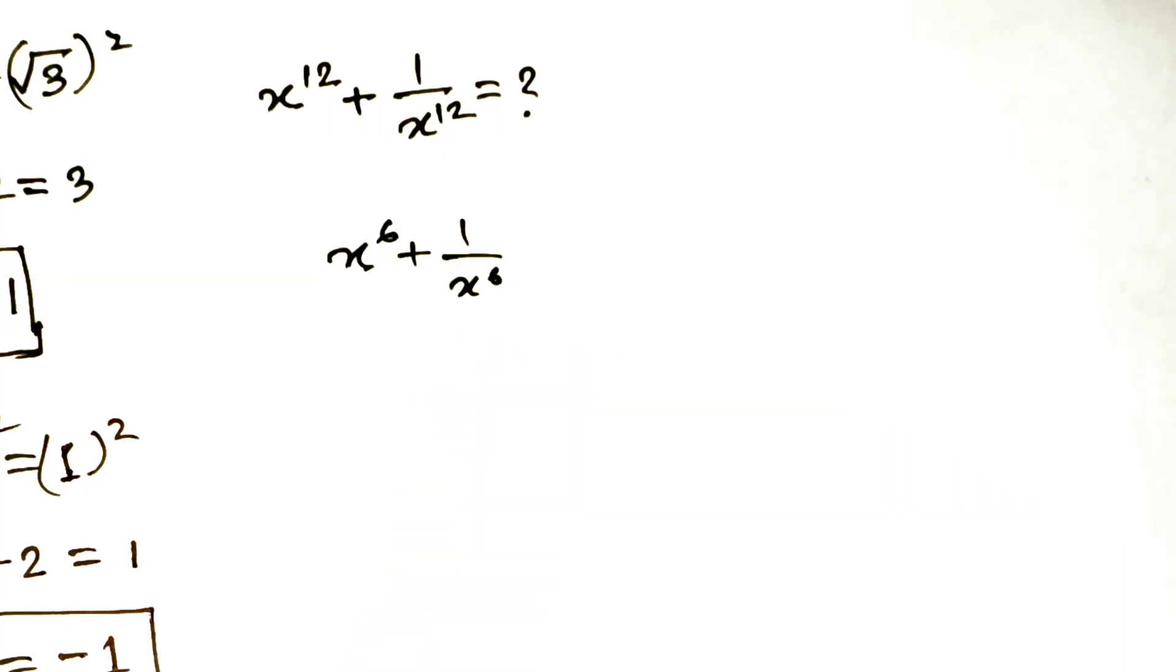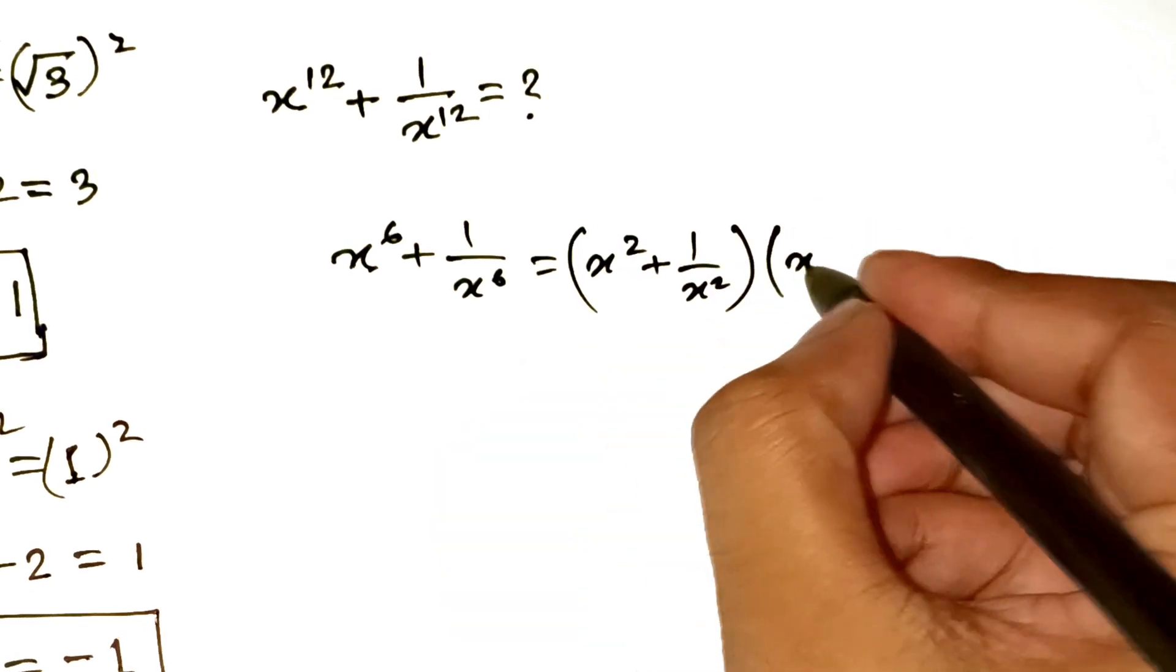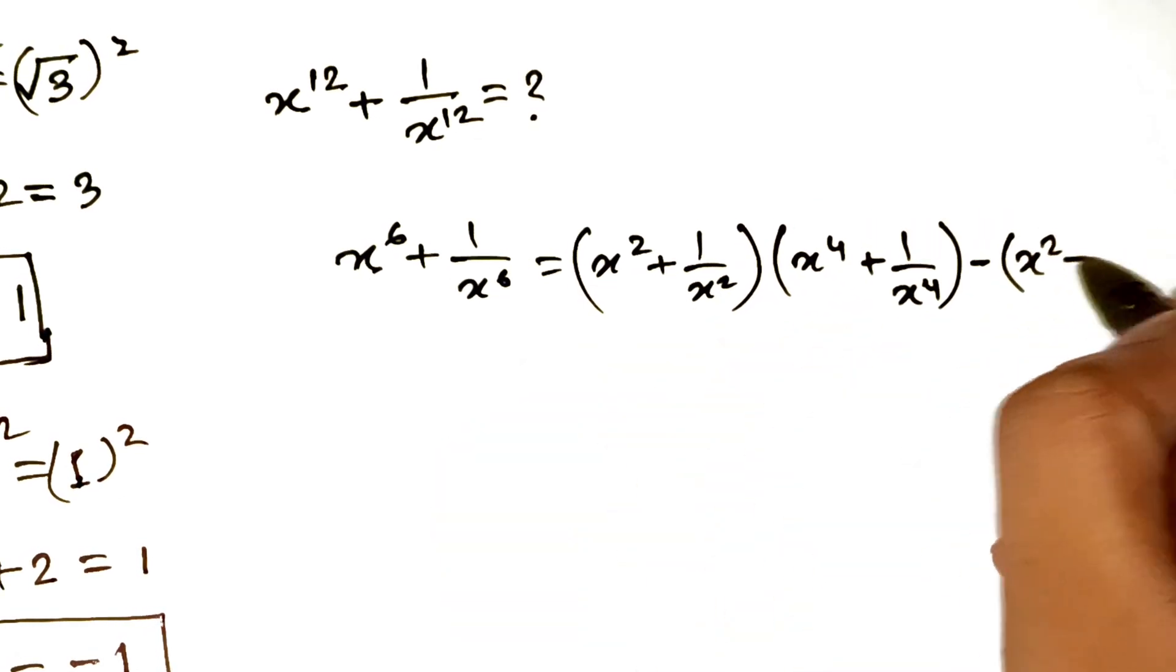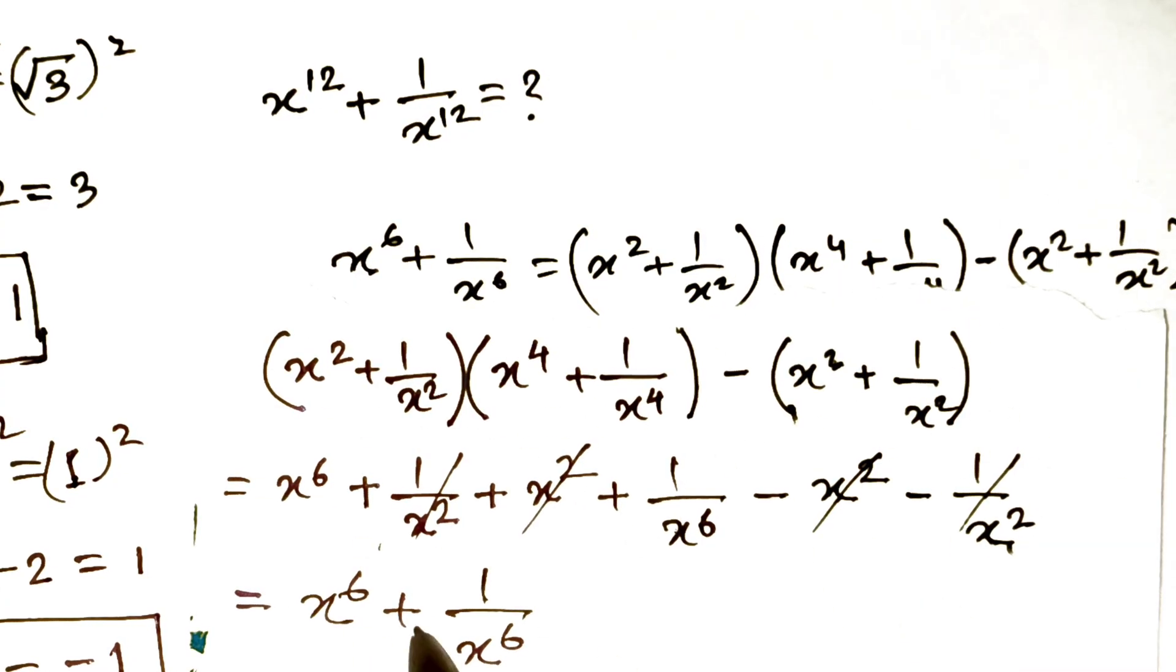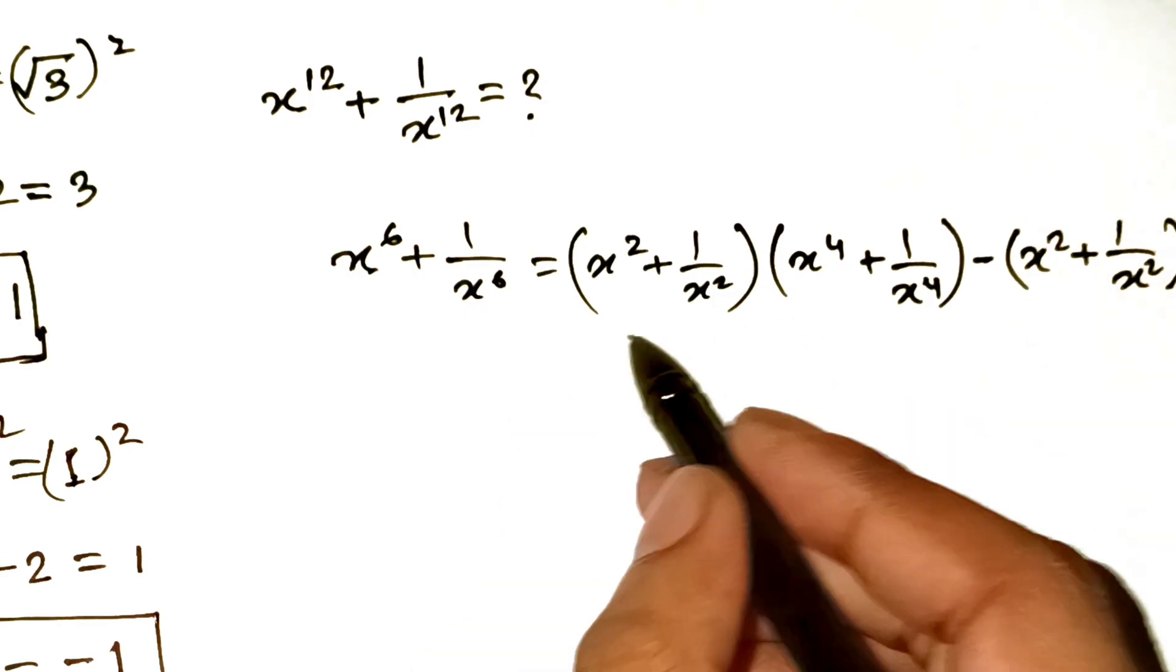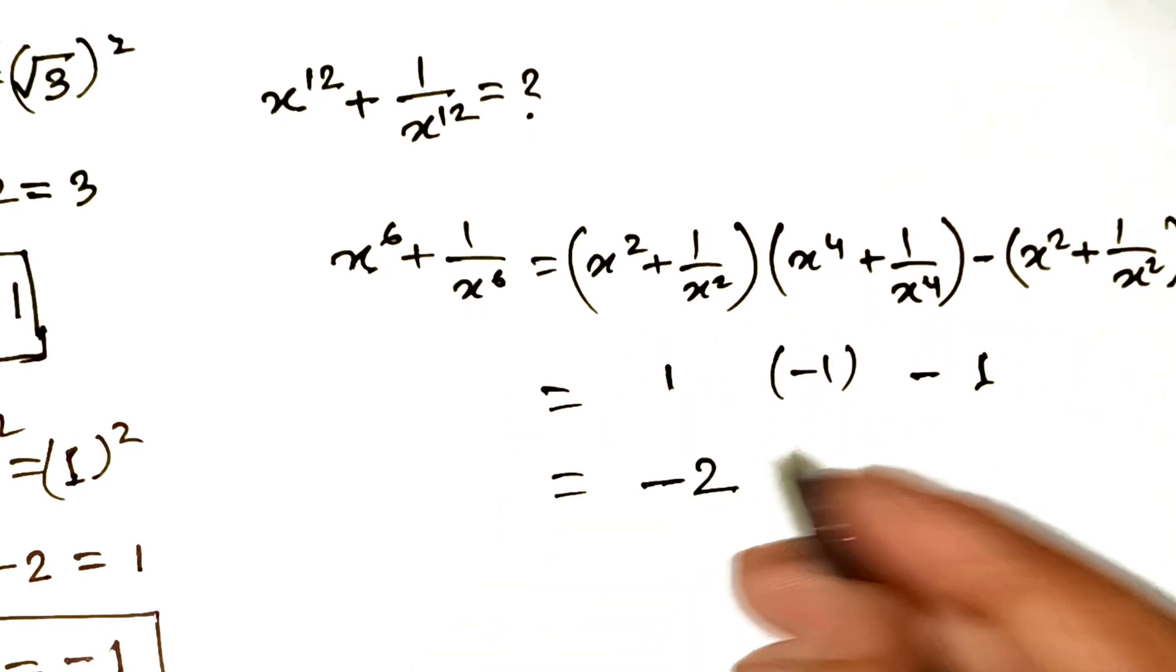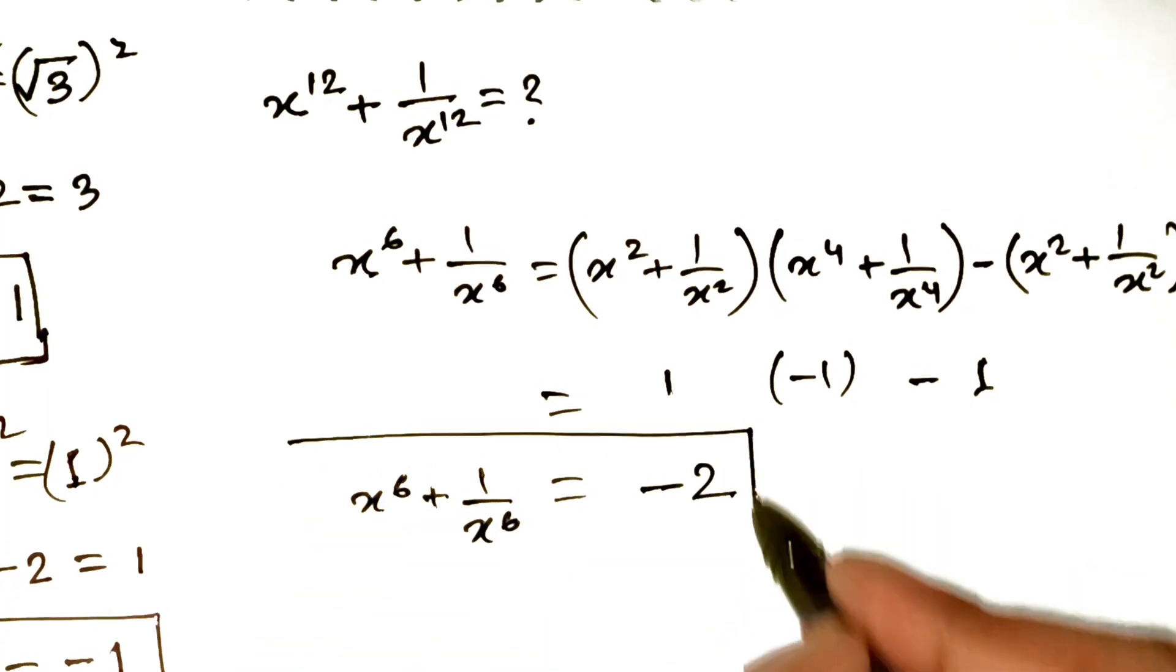There's a formula that says if you multiply x squared plus 1 over x squared with x to the power 4 plus 1 over x to the power 4, and subtract x squared plus 1 over x squared again, you directly get x to the power 6 plus 1 over x to the power 6. So plug in the numbers, 1 times minus 1 minus 1 gives us minus 2. That means x to the power 6 plus 1 over x to the power 6 equals minus 2.